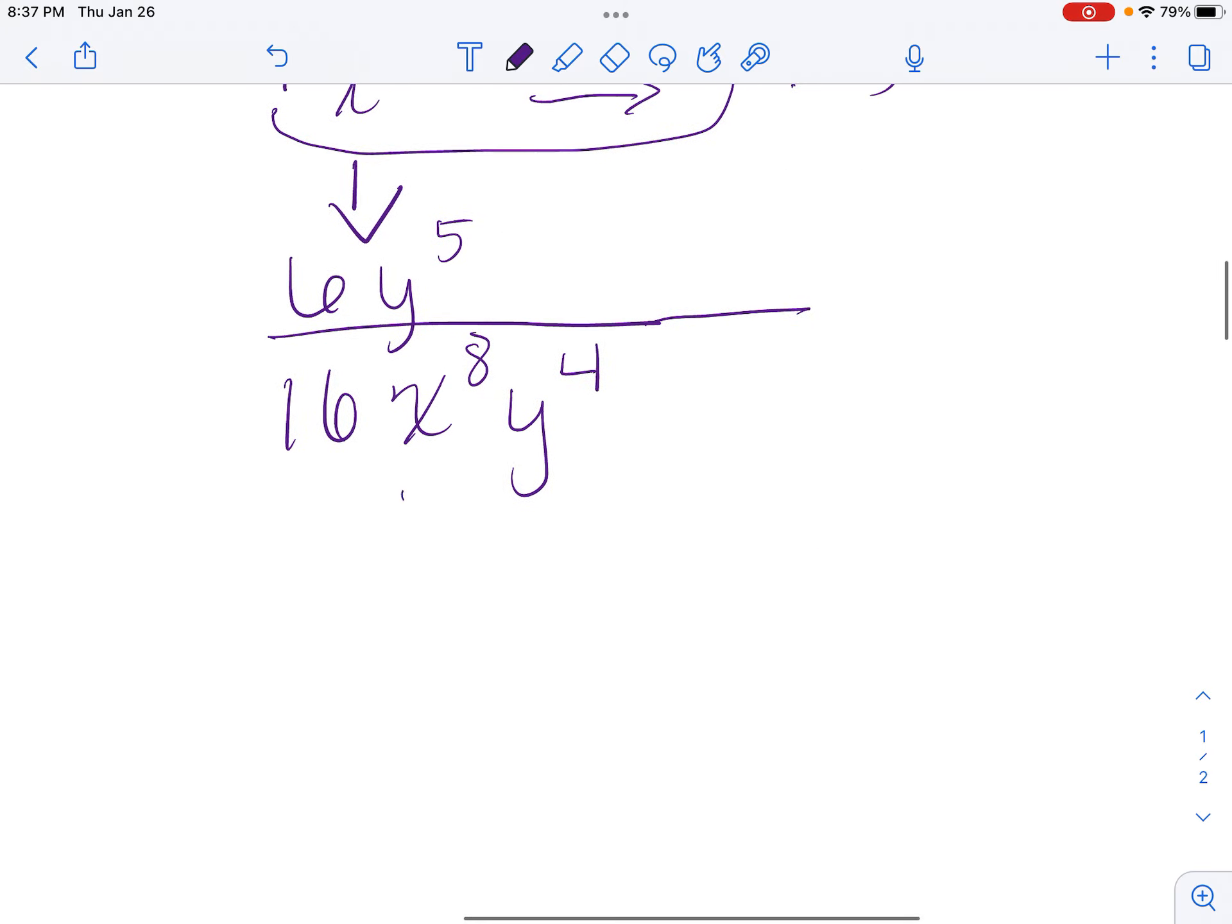And I see I have to simplify. I can divide 6 and 16 both by 2. So 6 divided by 2 is 3. 16 divided by 2 is 8. So I bring down my numbers. 3 on top, 8 on bottom.